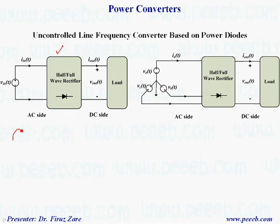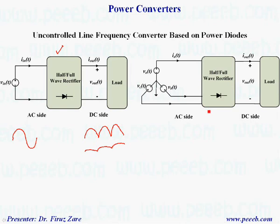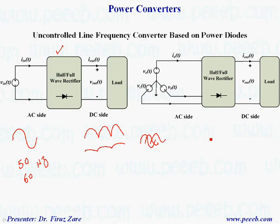Let's start with uncontrolled line frequency converters based on power diodes. This is a single phase — we can change AC voltage into DC and rectify the voltage. With a capacitor across the output we can get a better voltage, but it is still unregulated. The switching happens at line frequency, so if the grid frequency is 50 or 60 Hz the switching happens at that frequency. With a three-phase system with 120-degree phase shift between phases, we can get a more regulated voltage depending on the topology, but again the switching happens at line frequency.